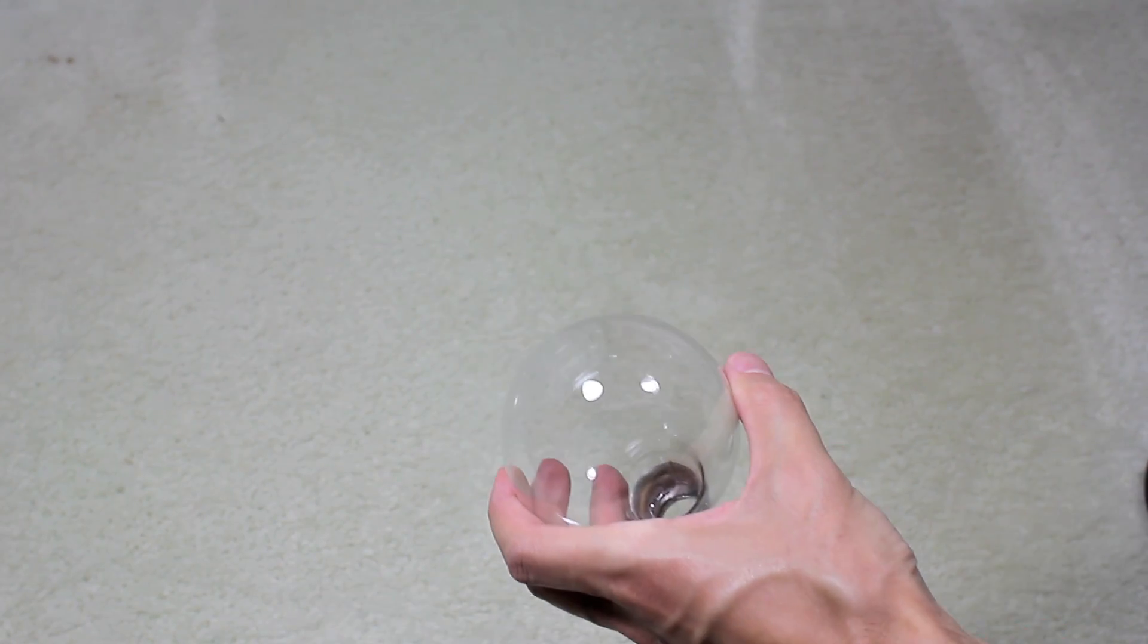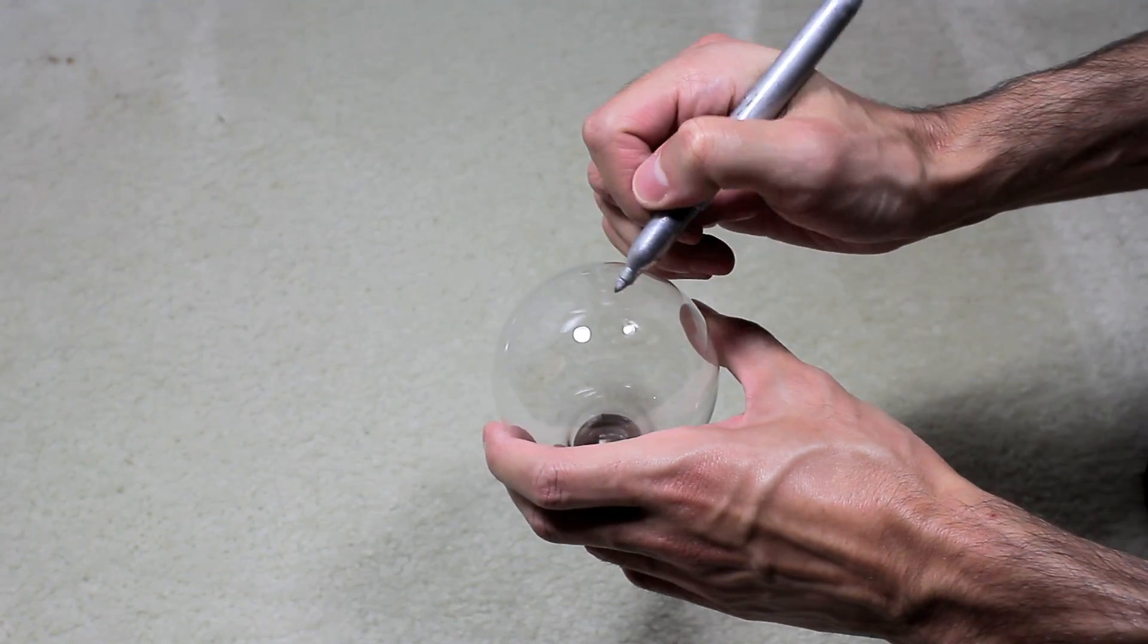Wipe the bulb with a clean cloth and then you can sign your name. Don't forget the date.